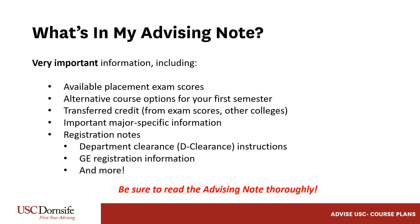The advising note contains very important information that goes along with your course plan, including but not limited to: placement exam scores, alternative course options in case the first recommended course is no longer available, transfer credit and how it applies to your degree, important major-specific information, and registration guidance on general education policies, de-clearance, and more. It's very important that you review the advising note thoroughly, as it will make for a smoother registration process.